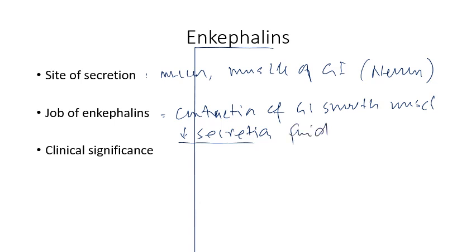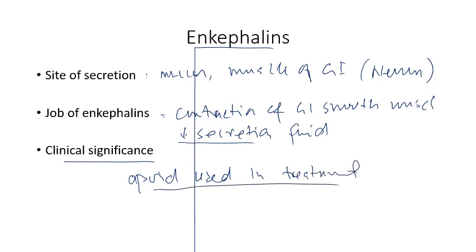That is why enkephalin analogues — opioids — are used in the treatment of diarrhea, though not commonly indicated these days. Opioids inhibit GI secretions, cause smooth muscle contraction, and bring about contraction of all sphincters — whether the esophageal sphincter, pyloric sphincter, or the ileocecal junction. This decreases secretions and causes constipation, and that is how opioids are used in the treatment of diarrhea. With this we come to the end of this lecture. Thank you so much.